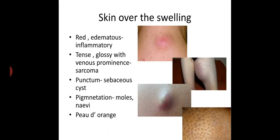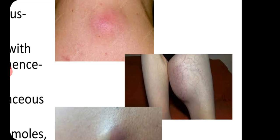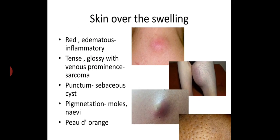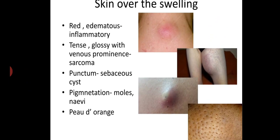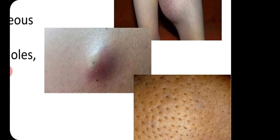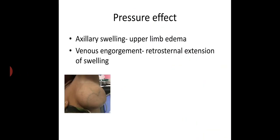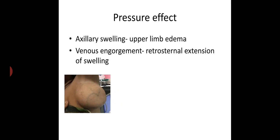Next, movement with protrusion of tongue — the cyst moves up on protrusion of tongue, as in thyroglossal cyst. Next, look at the skin over the swelling — whether red and edematous, which suggests inflammatory cause. In case of sarcoma, the skin is tense with venous prominence and glossy appearance. In sebaceous cyst, a punctum can be seen. Pigmentation in case of malignant naevus. Peau d'orange appearance in case of skin infiltration. Also assess pressure effects like axillary swelling causing upper limb edema, or retrosternal extension causing venous engorgement.